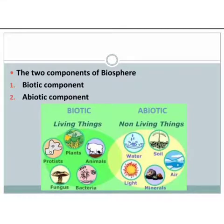The two components of the biosphere are the biotic component and the abiotic component. Biotic components are nothing but living things — it might be plants, microorganisms, animals, and bacteria. Coming to the abiotic component, it is a combination of non-living things. It contains all non-living components — it might be water, soil, light, minerals, as well as air.